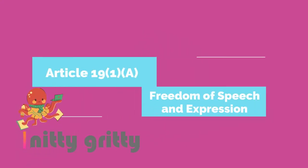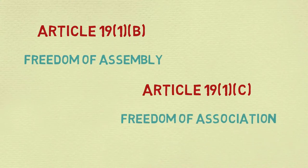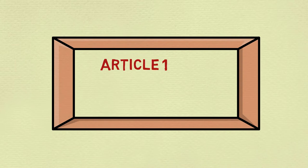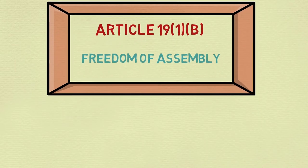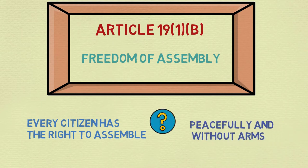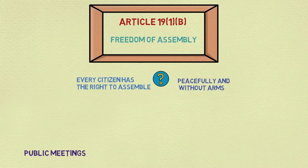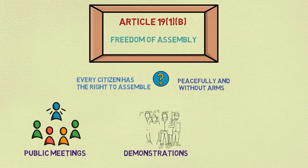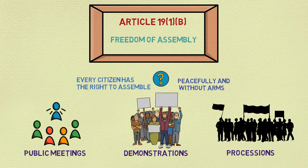In the last video we saw freedom of speech and expression. In this video we shall look at freedom of assembly and freedom of association. Article 19, clause 1, sub-clause (b): Freedom of Assembly. Every citizen has the right to assemble, but peacefully and without arms. It includes the right to hold public meetings, demonstrations, and to take out processions.